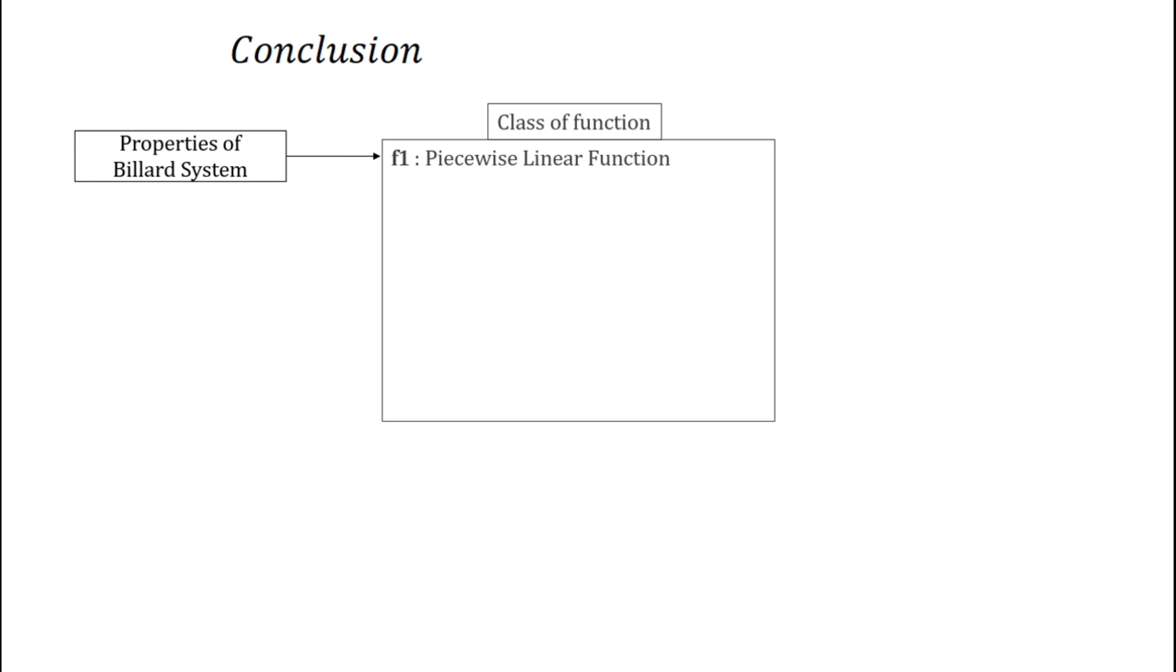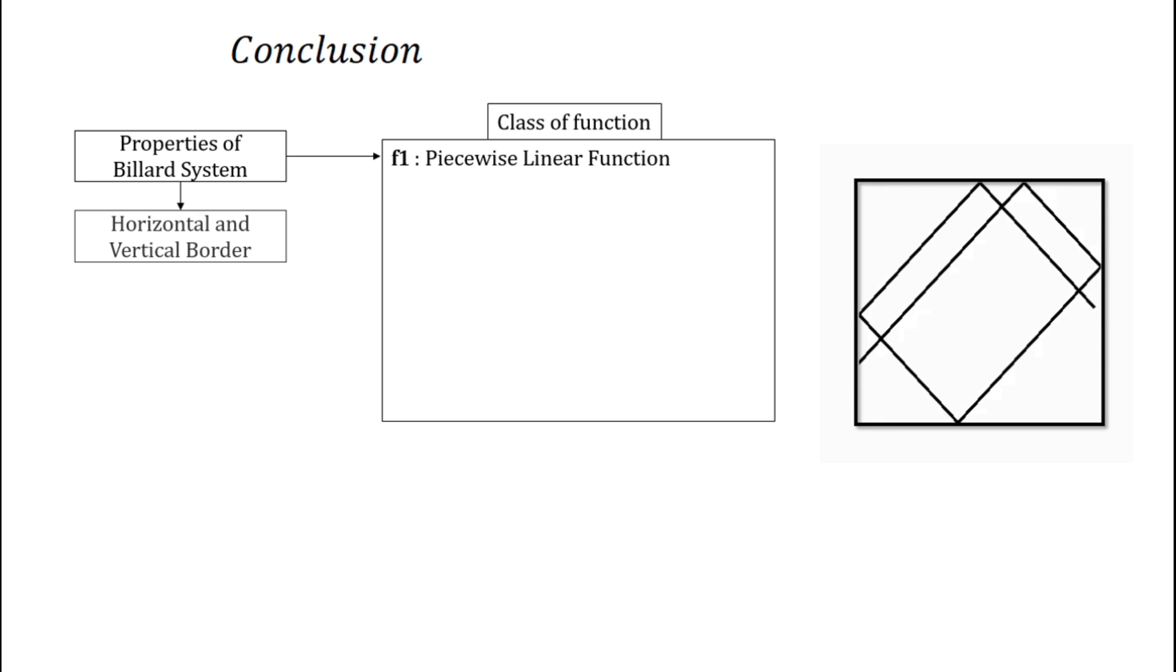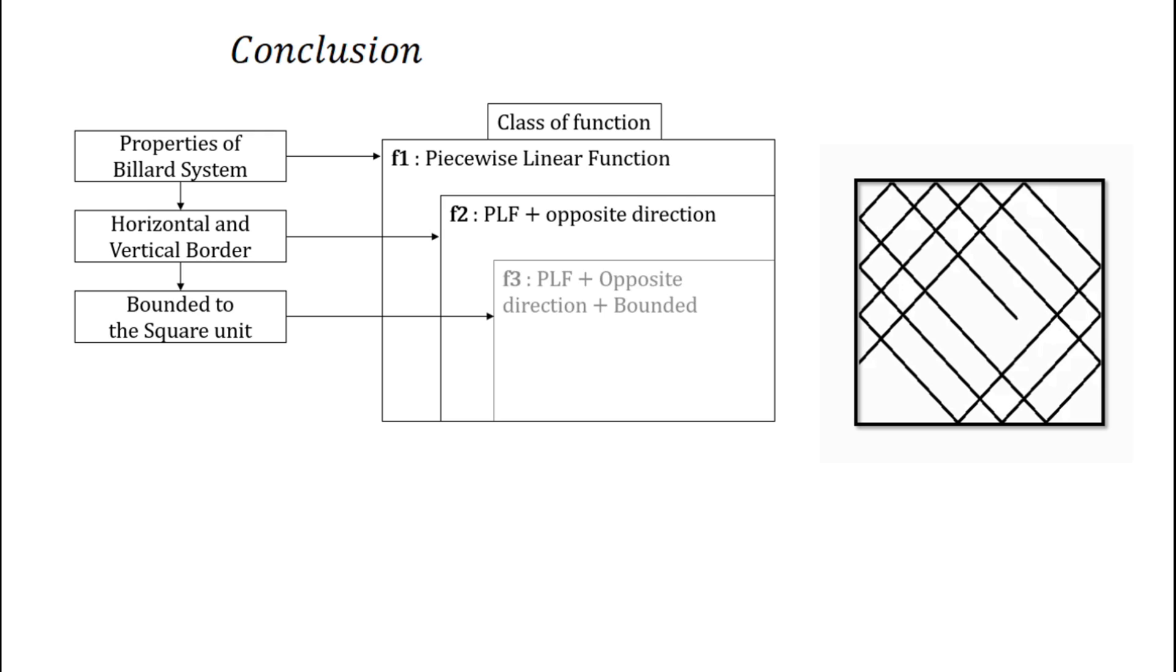So let's summarize all the process we've been through. We start from the motion properties of a billiard system and build a first class of function. Then we study the impact of reflection on horizontal and vertical borders. After that, we added the bounded properties.